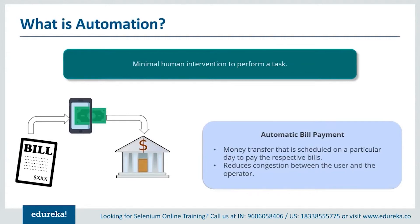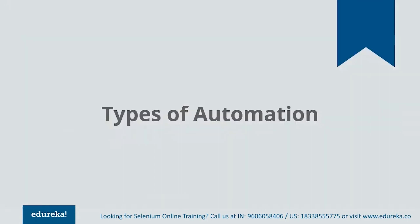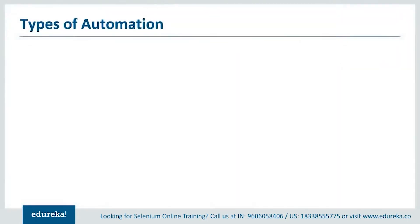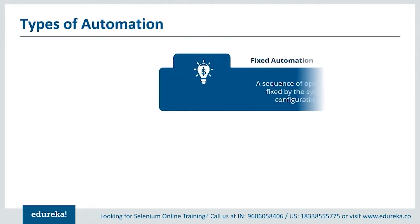Now that you've understood what automation is, let's understand the different types of automation that exist. There are basically three types depending on the process which the user defines. First is fixed automation, which is the sequence of various operations that remains fixed and cannot be scheduled or customized by the user. This type is mainly used in the mechanical industry to carry out a desired job.